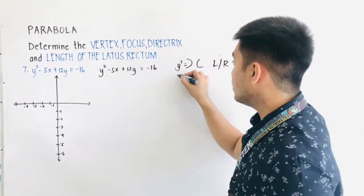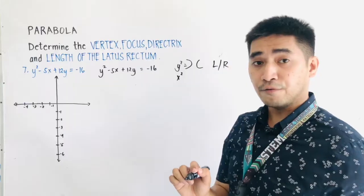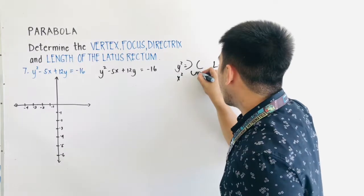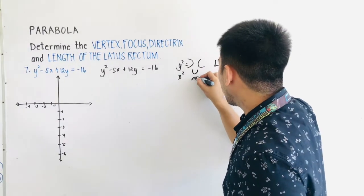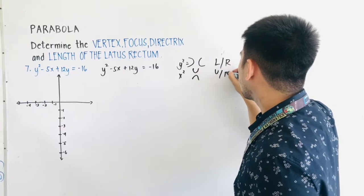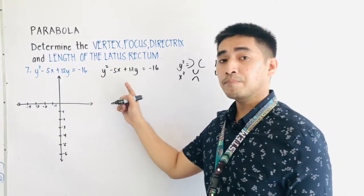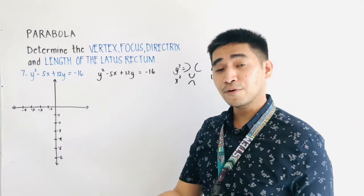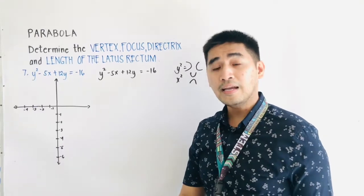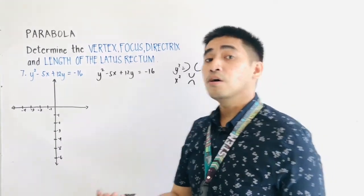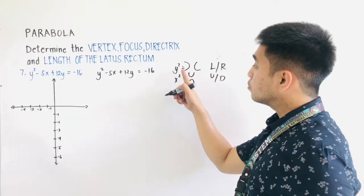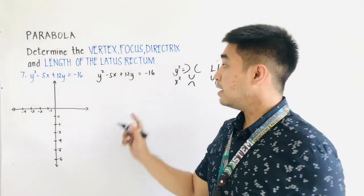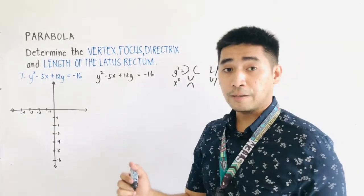If the given equation has x², therefore our parabola is either opening upward or downward. Since our given equation has y², expect that the parabola will open to the left or to the right. However, we do not know yet the exact opening of the parabola, because the opening will depend on the sign of the right side.